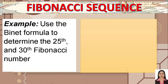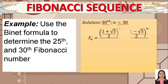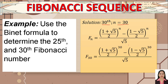For the 30th Fibonacci number, n equals 30. Using the Binet formula, substitute n equals 30 into the expression and input it into the calculator. The result is f-sub-30 equals 832,040. This is how we use the Fibonacci sequence to find large terms.